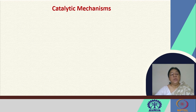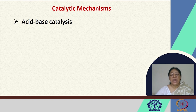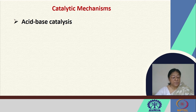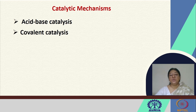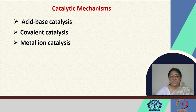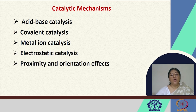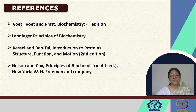In summary, we looked at acid-base catalysis and the specific amino acid residues involved, including histidine, aspartic acid, and glutamic acid. We will look at covalent catalysis and metal ion catalysis in the next lecture, as well as the overall proximity and orientation effects.